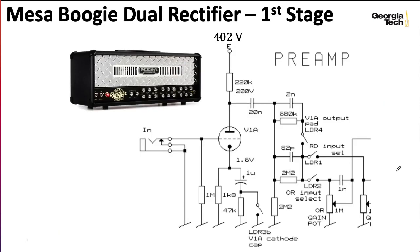So we will continue our analysis of the first stage of the Mesa Boogie dual rectifier, focusing on this part of the circuit here. So if you haven't seen the previous lecture talking about biasing, I recommend you go check that out. But if you haven't, you can keep watching this one and get the gist of what's going on.